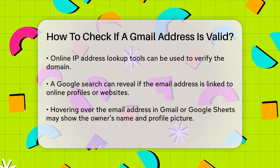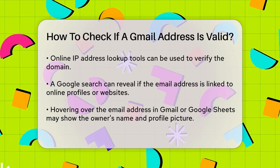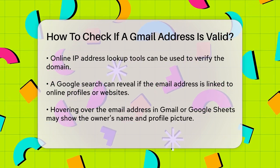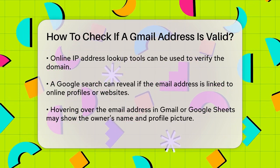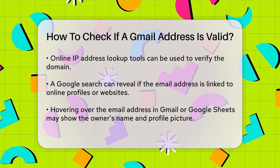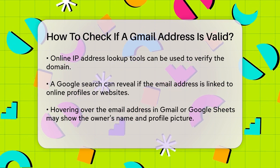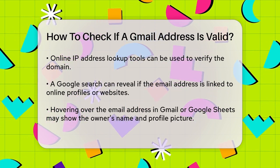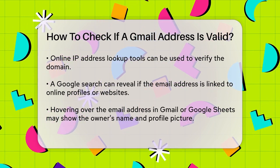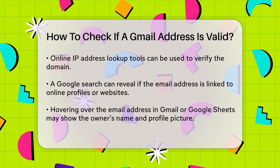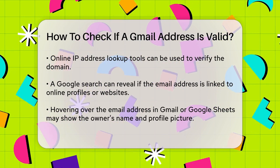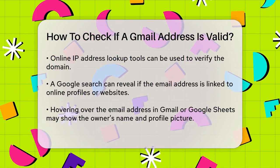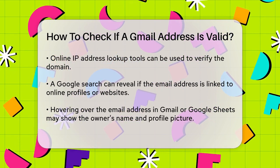Hovering over the email address in tools like Gmail or Google Sheets can also give you clues. When you hover over a valid email address, you might see the person's full name and profile picture, indicating that the address is active and linked to an account.